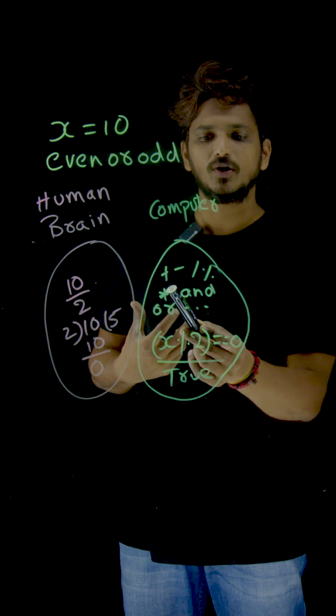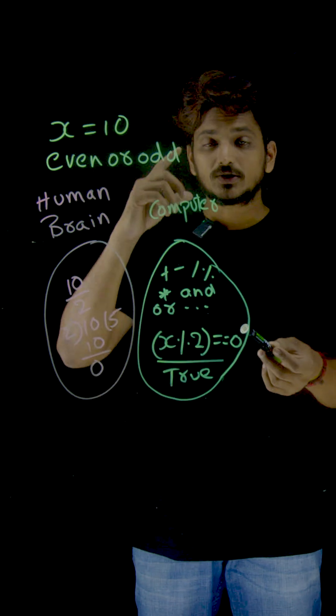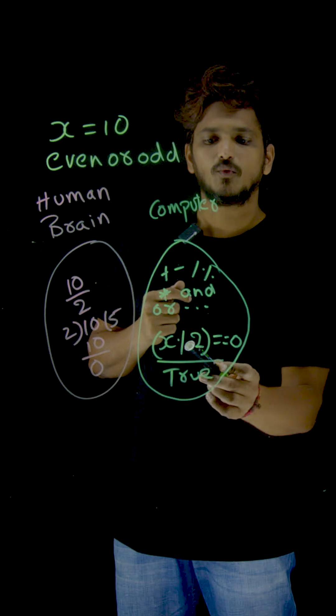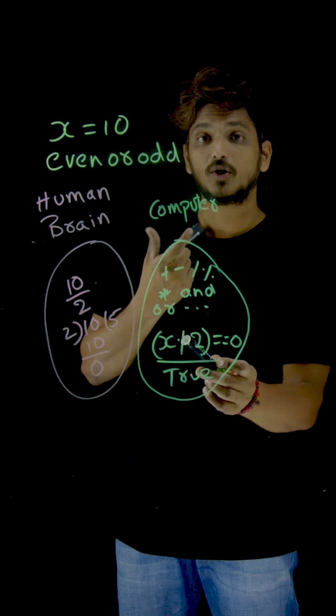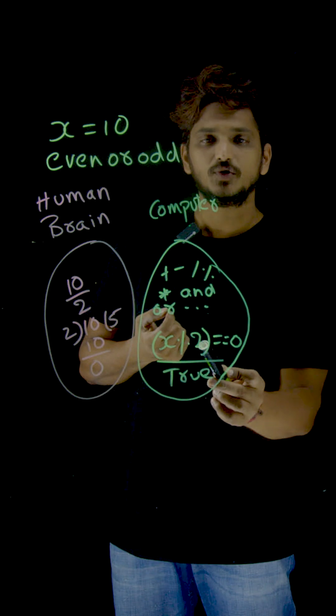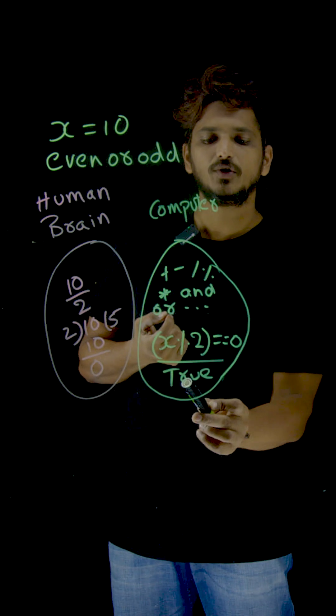So what's the possible operation to do this? X modulus 2. Whatever output you get here, modulus is going to provide the remainder value. If x modulus 2 is 0, meaning 0 equal to 0, it is going to give you true.